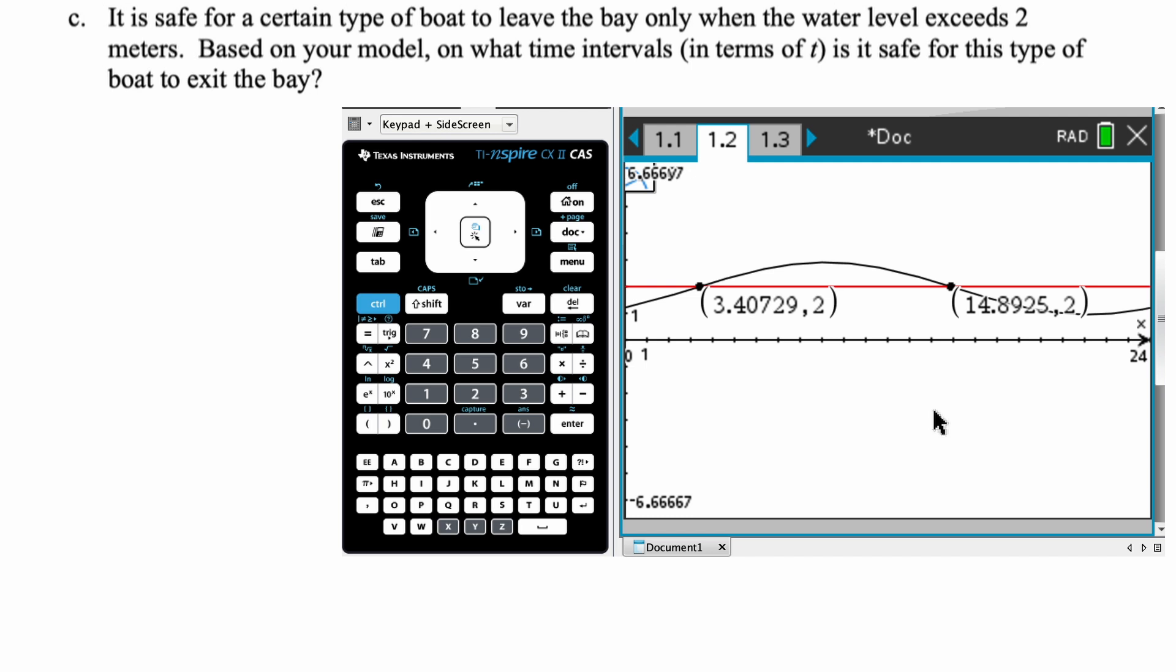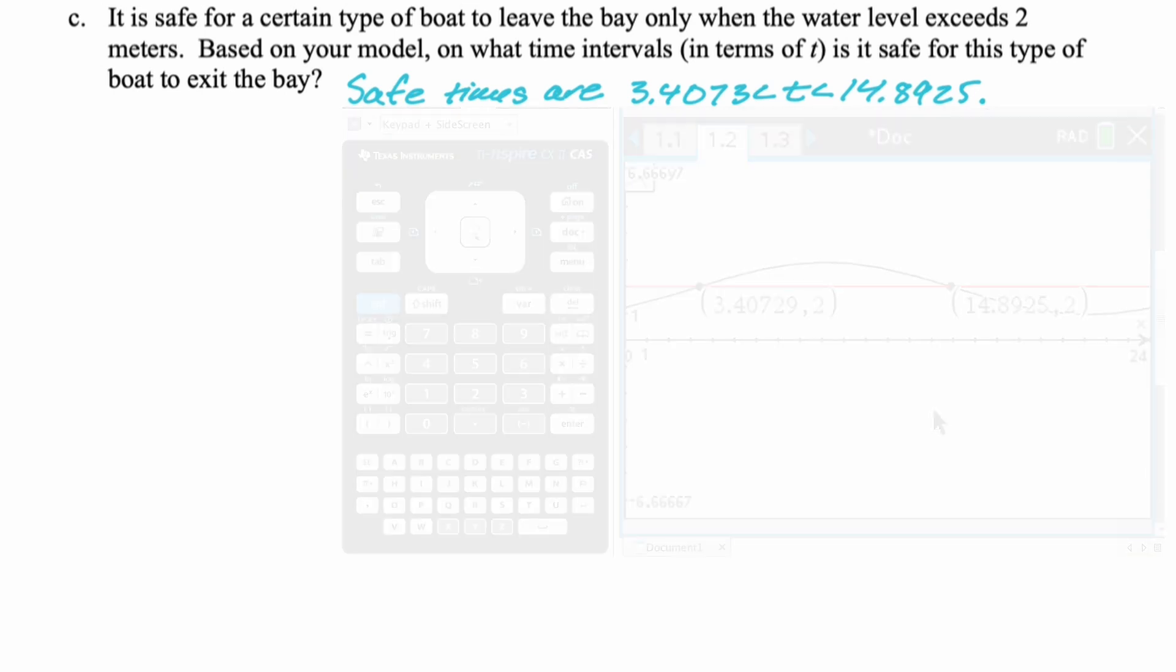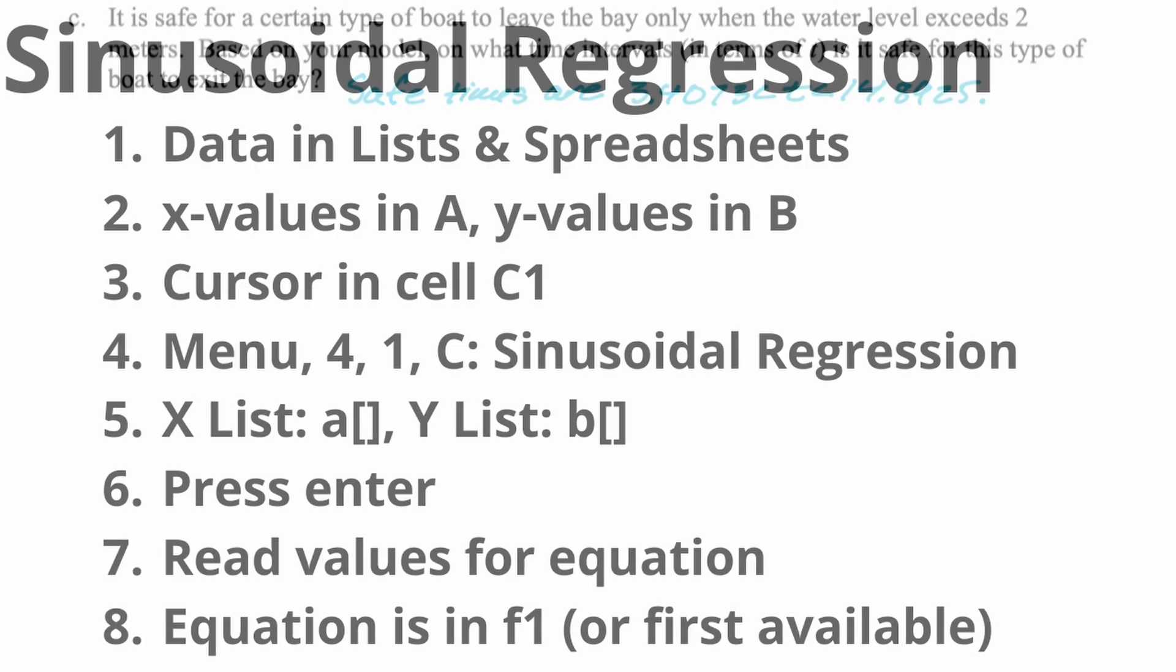So I'm going to take this. I'm just going to handwrite it in. And that will be our answer. Okay. And so from there, we'll just jot down our answer, which is our safe times are 3.4073 is less than T is less than 14.8925. And those would be like T times, which would equate to hours. It's a lot of the day.